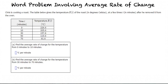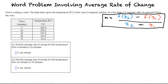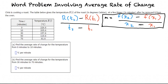Recall that the formula for average rate of change is the same as the slope formula: m equals f of x2 minus f of x1, all over x2 minus x1. Or we can write it, replacing f and x for R and T: R of T2 minus R of T1, all over T2 minus T1.